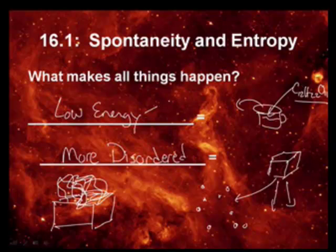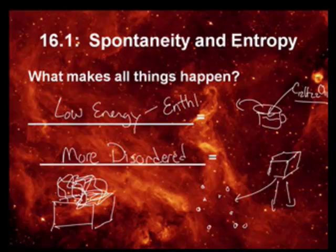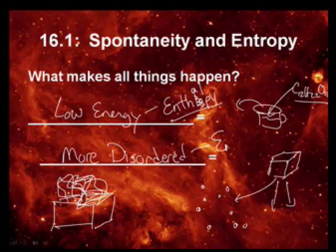Low energy, or the energy in this instance, is called enthalpy — E-N-T-H-A-L-P-Y. And the measure of disorder is entropy. So there are two big E words: entropy and enthalpy that we need to discuss at length.